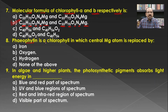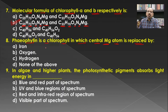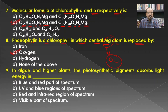Pheophytin is a chlorophyll in which the central magnesium atom is replaced by what? Comparing the structure of pheophytin to that of chlorophyll, the magnesium is replaced by two hydrogen atoms (oxygen in some versions). Hence the answer is oxygen for this question.